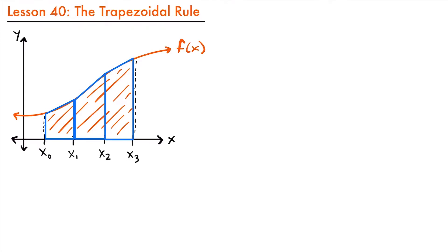Notice that with each trapezoid, the slope or the line connecting the two edges is not the same — it changes based on the function, because the top part of each side of each trapezoid meets up with the function. That is the idea. When you draw your trapezoids, each side is going to touch the function, which is why trapezoids give a better approximation than rectangles — they more closely fit the shape of the region.